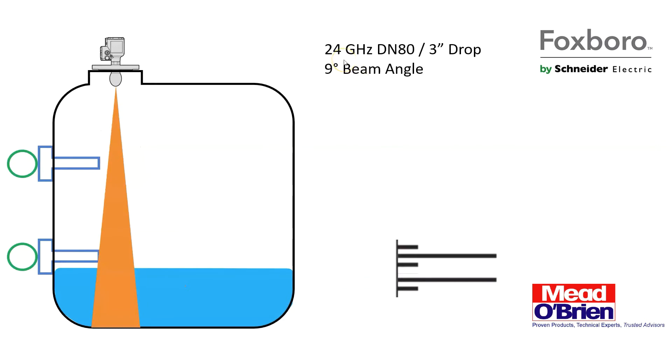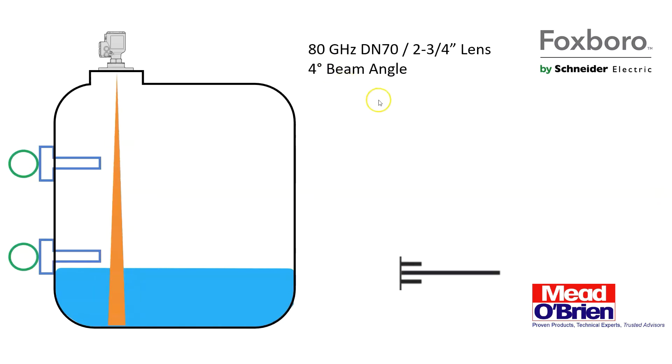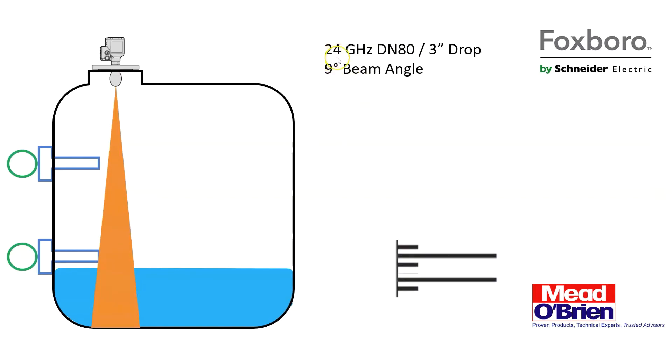So when you get to a 24 gigahertz, we notice that the beam gets a little smaller. Remember, the lower the frequency, the wider the beam. So as we get to a much higher frequency, we're going to see a smaller beam. But here at 24, we're kind of in the middle. So we've got a three-inch drop antenna on this one, a nine-degree beam angle, and the same size tank, same dimensions.